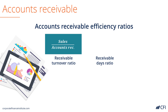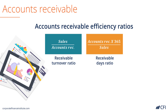Now let's look at the accounts receivable days ratio. Instead of looking at the number of times that accounts receivable turns over in a year, we're going to look at the average number of days it takes for that receivable to turn over. The formula is the accounts receivable balance on the balance sheet — either the ending period or the average of the last two periods — multiplied by 365 days, then divided by sales. The result is the average number of days it takes for a company to receive payment for the sales it's made.